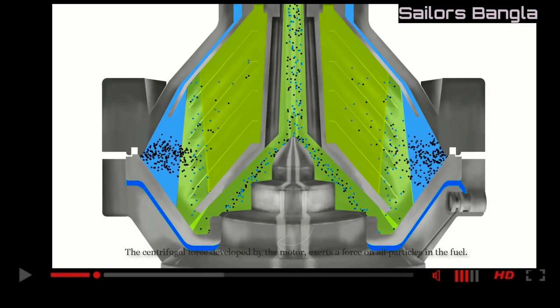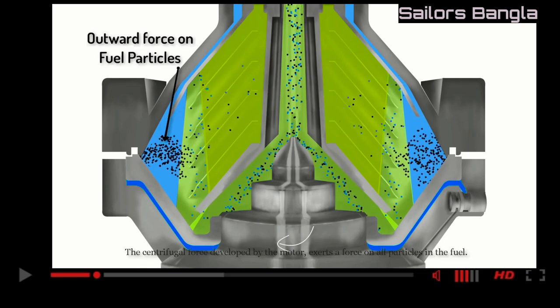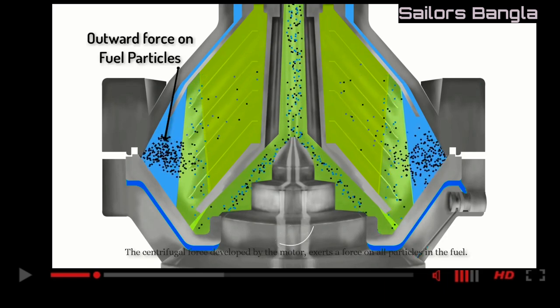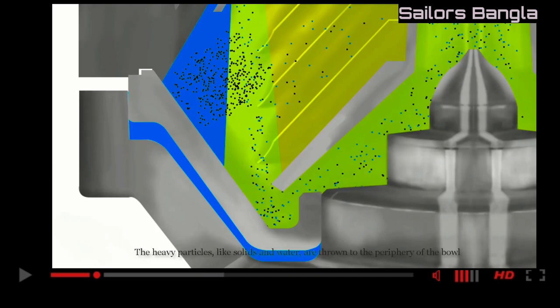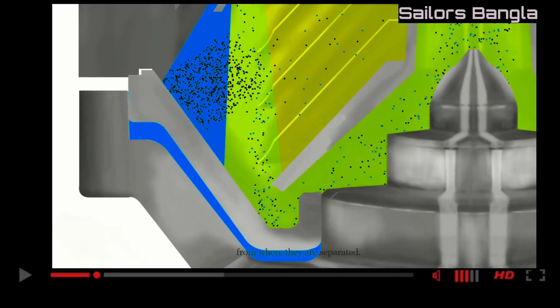The centrifugal force developed by the motor exerts a force on all particles in the fuel. The heavy particles, like solids and water, are thrown to the periphery of the bowl, from where they are separated.